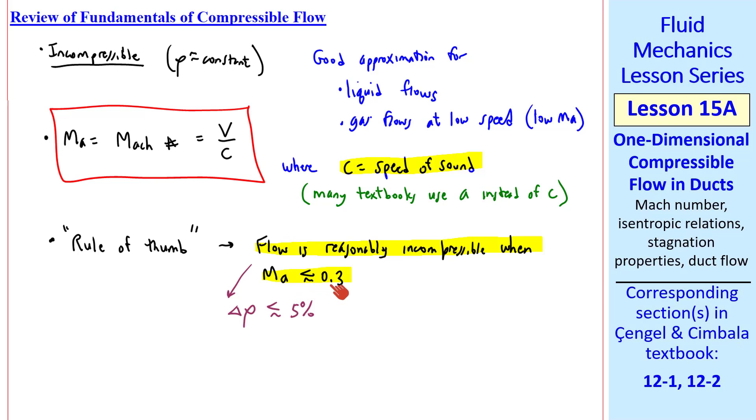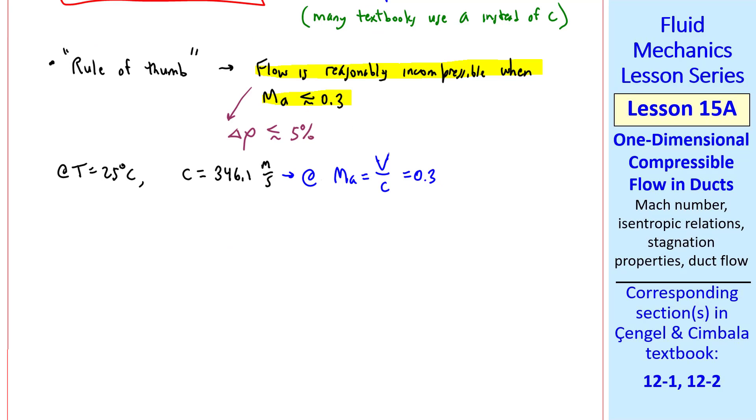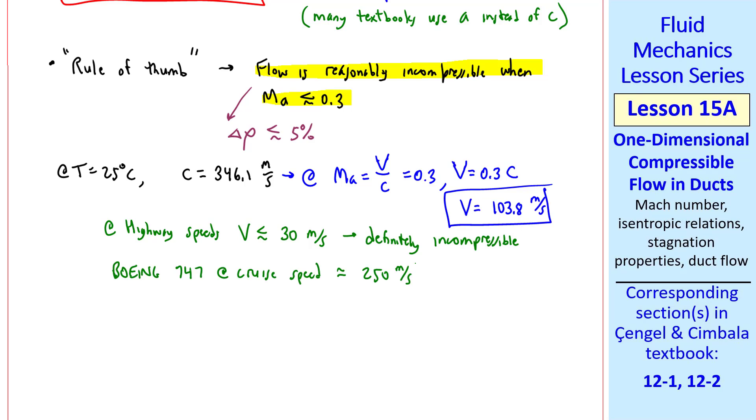But at Mach numbers greater than about 0.3, we cannot neglect compressibility effects. Consider air at standard ambient temperature, 25 degrees C, the speed of sound turns out to be 346.1 meters per second. So at a Mach number of 0.3, the speed is 0.3 times c, or about 103.8 meters per second. For comparison, most of us drive below 30 meters per second at highway speeds, so the incompressible approximation is definitely okay.